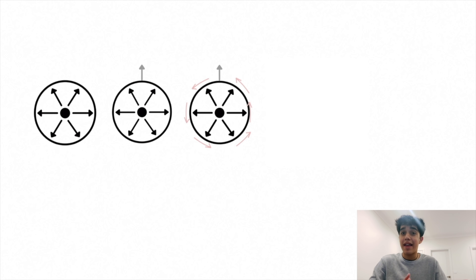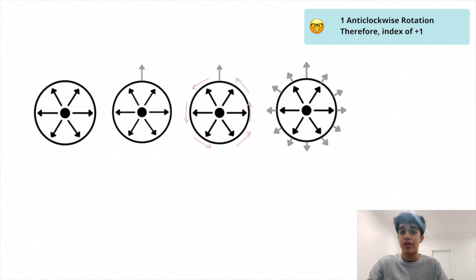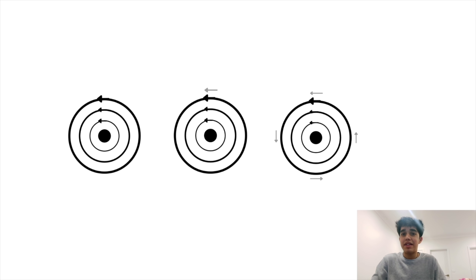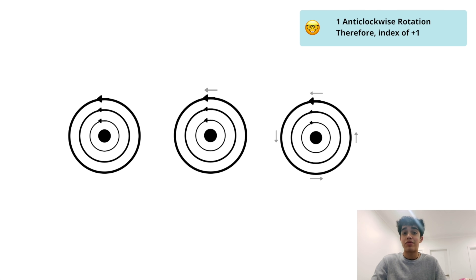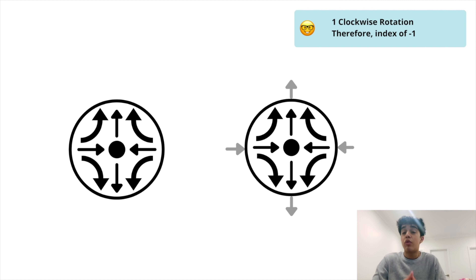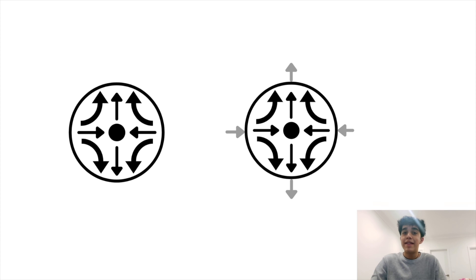To find the index, we place a hypothetical vector on the surface, orient it in the direction of a vector in that region, then move it anti-clockwise along the surface while maintaining its direction. In our first example, the vector makes one anti-clockwise rotation, giving an index of plus one. In a second example, the vector also makes an anti-clockwise rotation — index plus one. In a third example, the vector makes a clockwise rotation, giving an index of minus one.